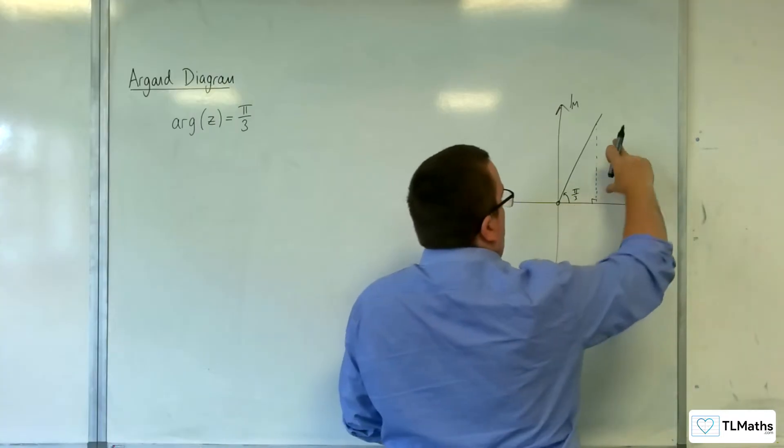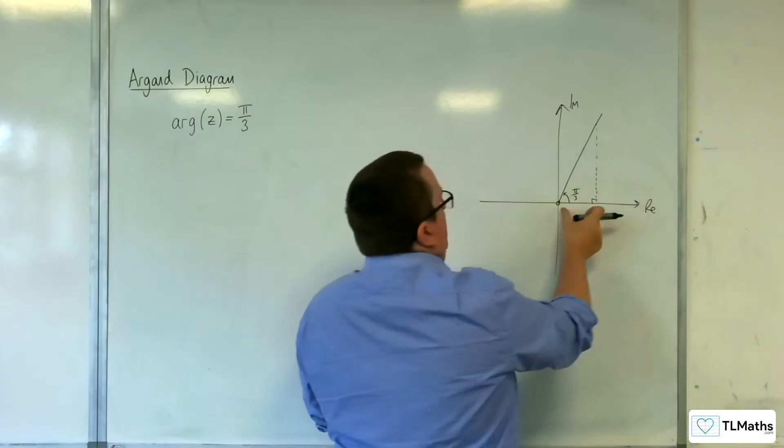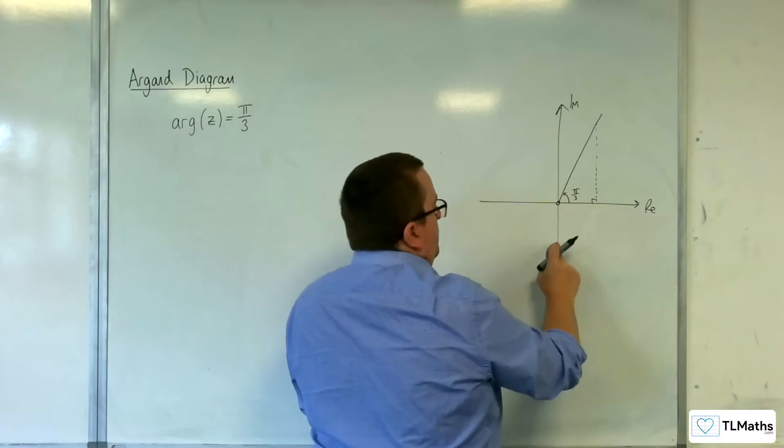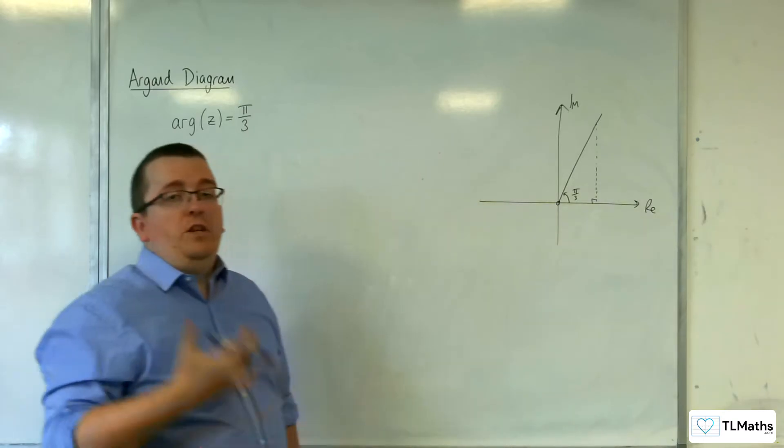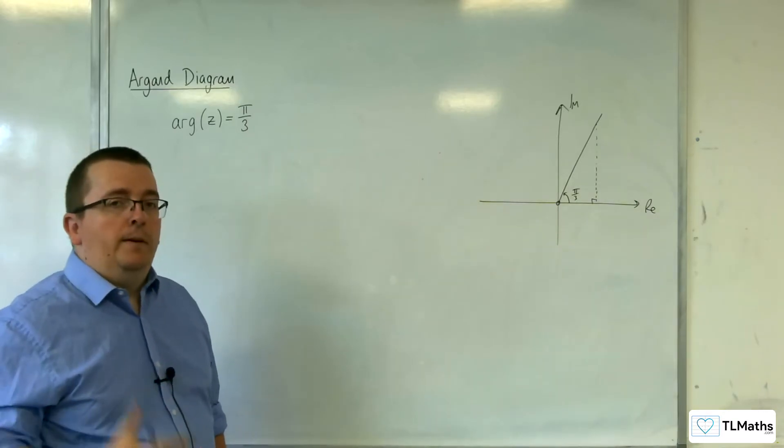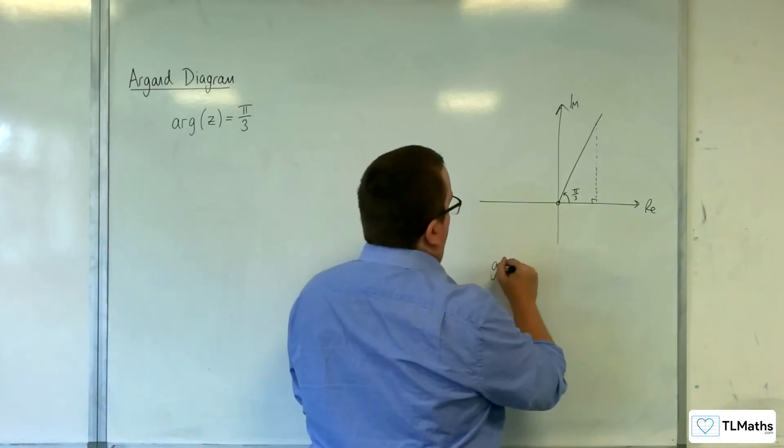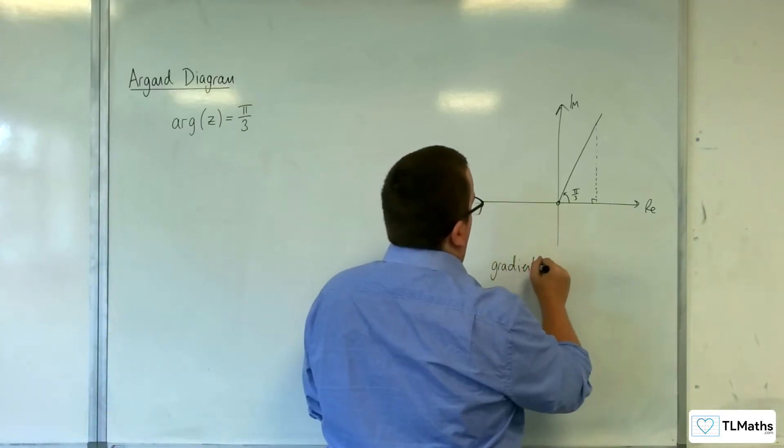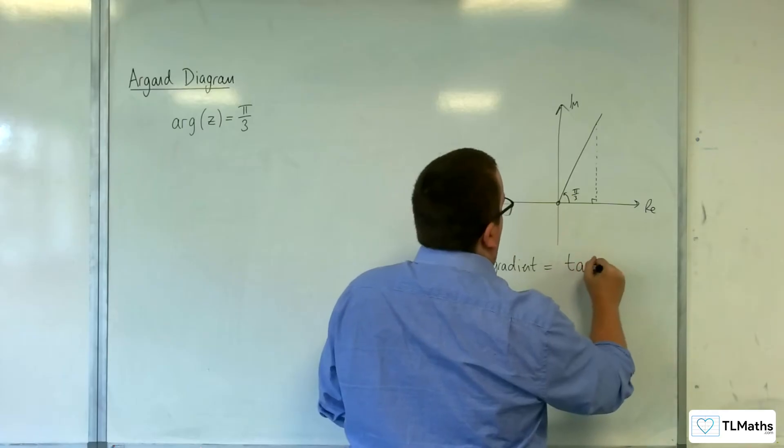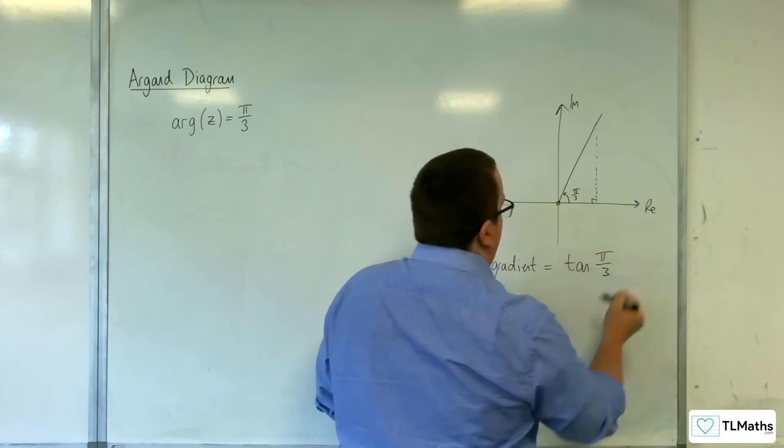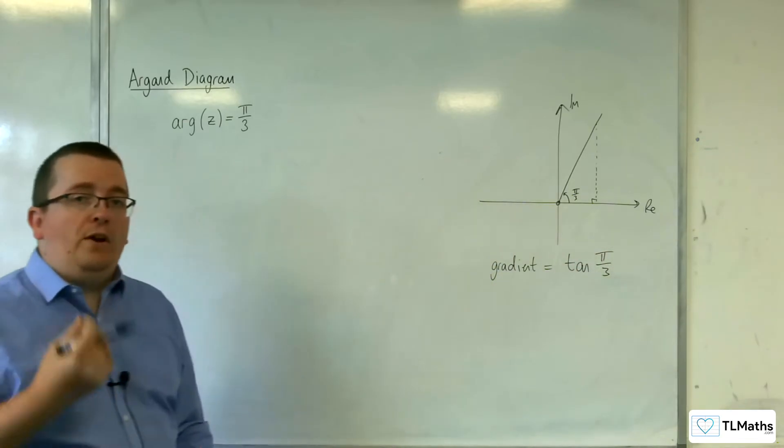For your right-angled triangle, this is the opposite over the adjacent. The opposite over the adjacent, you understand to be tan of the angle. So the gradient of your line is equal to tan of the angle, because that is the opposite over the adjacent.